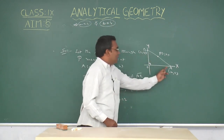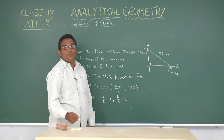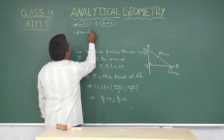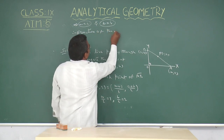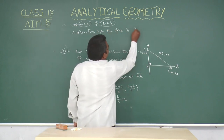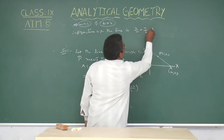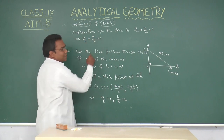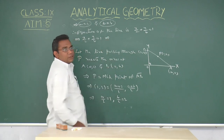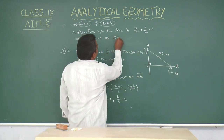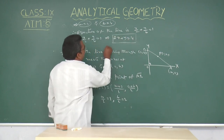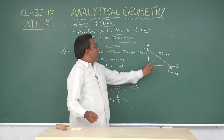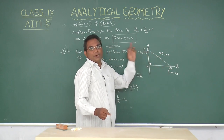Therefore, the equation of line in intercept form is x by A plus y by B equals 1. That implies x by 2 plus y by 4 equals 1. Multiplying this equation by 4, we get 2x plus y equals 4. This is the equation of the line passing through capital P (1, 2) such that P bisects the segment between the axes.